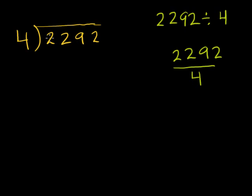So 4 goes into 2 how many times? It goes into no times. So let's move on to the 22. 4 goes into 22 how many times? Let's see, 4 times 5 is equal to 20. 4 times 6 is equal to 24. So 6 is too much. So 4 goes into 22 5 times.